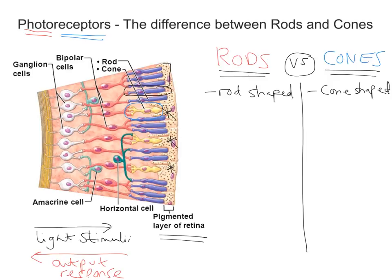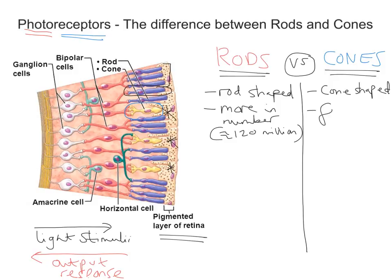In terms of number, there's actually a far greater number of rods than there are cones. There are approximately 120 million rods per eye, compared with approximately 6 million cones. So there are more rods — approximately 120 million — whereas there are fewer cones, approximately 6 million.